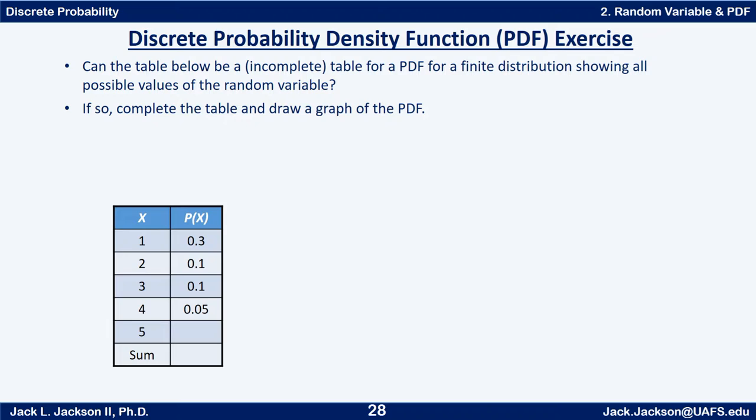Here's an incomplete table for a PDF for a finite distribution showing all the possible X values. But if you notice, the PDF of 5 is missing. Can you finish this out? First of all, is this even a possible table? And if it is, finish it and make a graph. Go ahead and finish this now. Press pause.